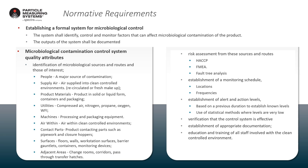The normative requirements define what's required in establishing a formal system for microbiological control. This includes defining the microbiological contamination control system's quality attributes, the identification of microbial sources and routes of interest, risk assessment to see how those sources are generated and their routes into critical areas, the establishment of a monitoring schedule, the establishment of alert and action levels, verification that control systems are effective, and ensuring documentation, education and training is performed.